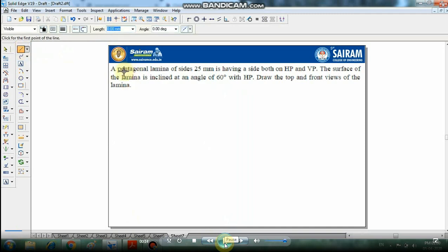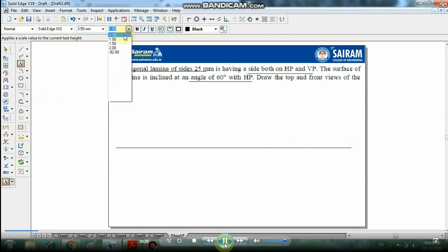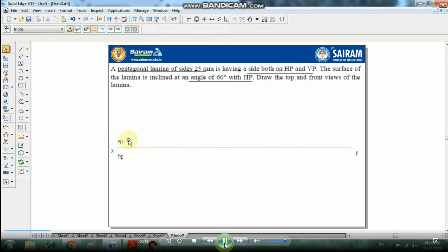In this problem we are going to see a pentagonal lamina, 25 mm side on side, both on HP and VP. The surface is inclined 60 degrees to HP. Draw the XY line and mark VP above the reference line and HP below the reference line.